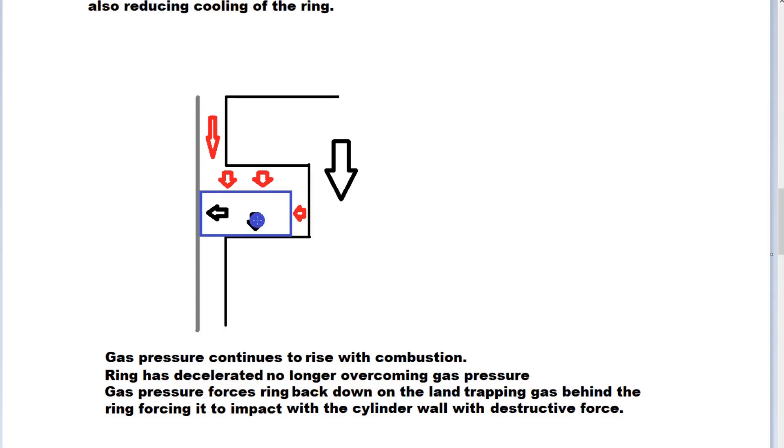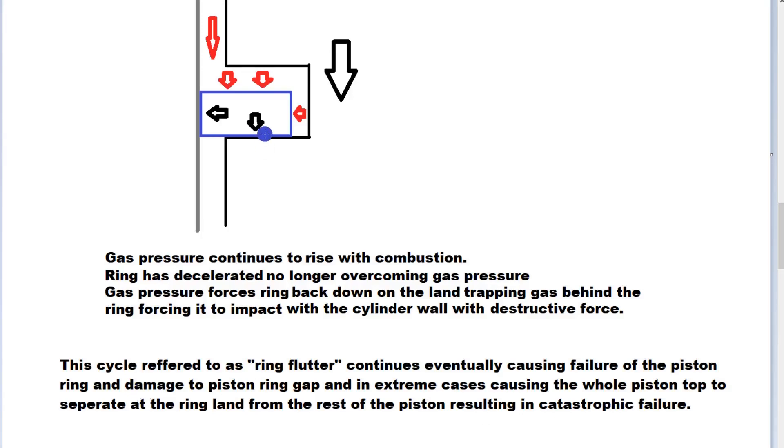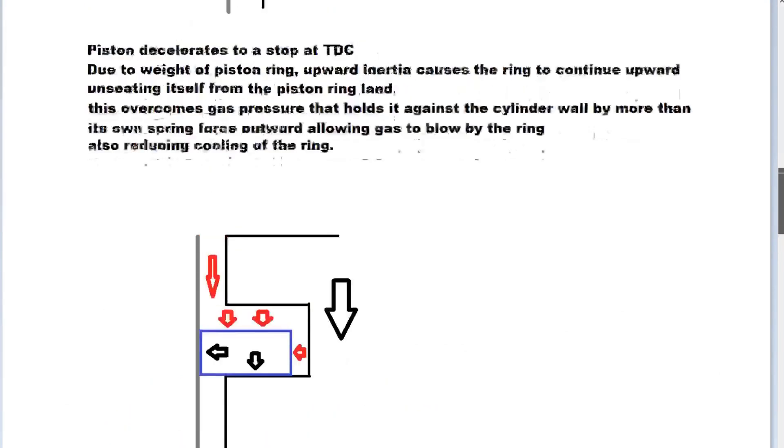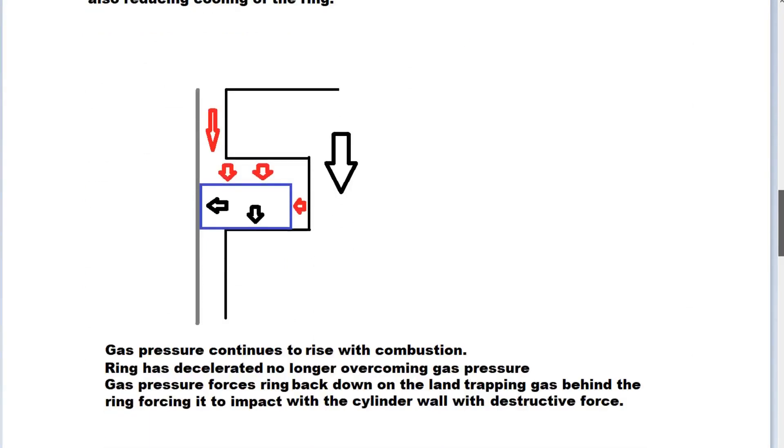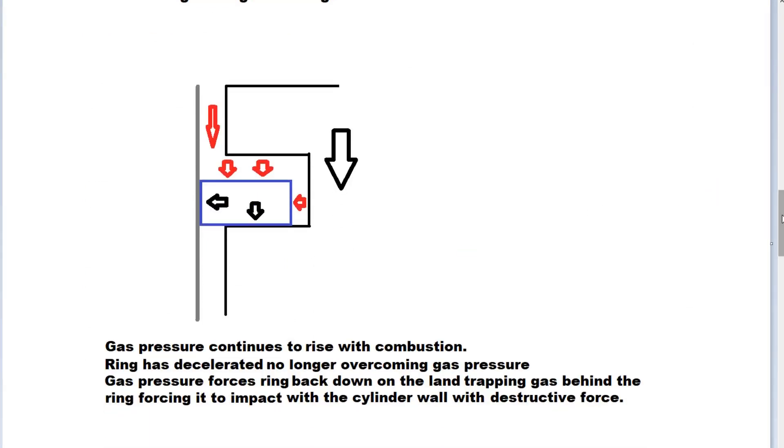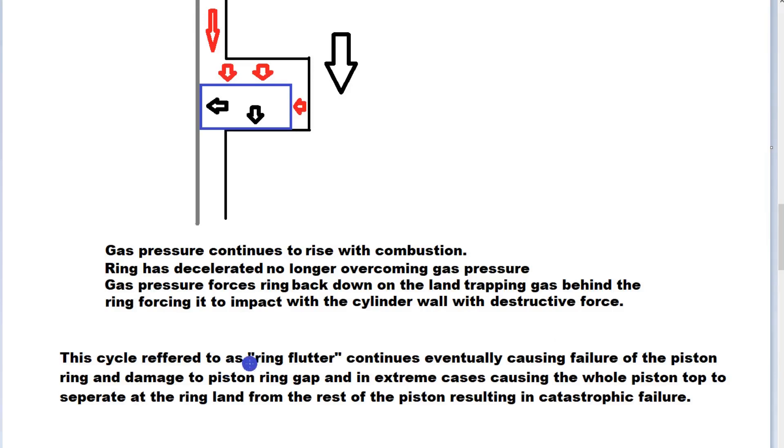It slams against the wall and it slams against the piston land. This continually happens at every cycle at very high speed. The piston gets to the top, the piston stops, the ring keeps going and jumps off, the gas blows past it, loses pressure off the wall, the ring stops, gas pressure is still rising, combustion is not complete yet, the ring then slams back down on the land and out against the wall. This cycle is referred to as ring flutter.